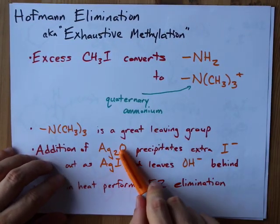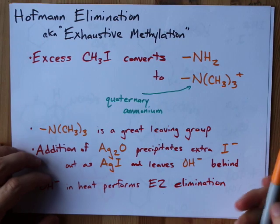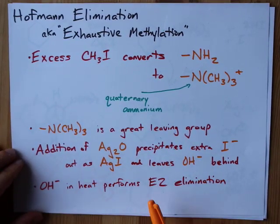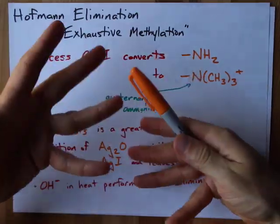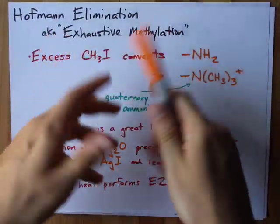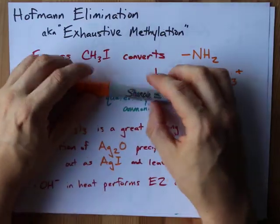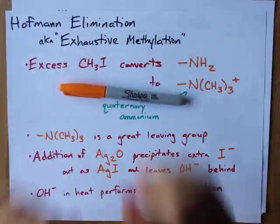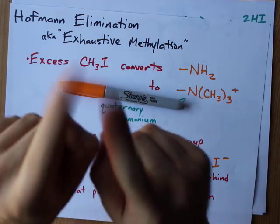The addition of Ag2O will precipitate out the I-, leave you with some hydroxides, and the hydroxides do an E2 elimination. Whether or not that gives you a cis or a trans or the least substituted product is more of a stereochemical concern, which you're responsible for, but it's too much to cover in one video. This is a mechanism video. Best of luck.